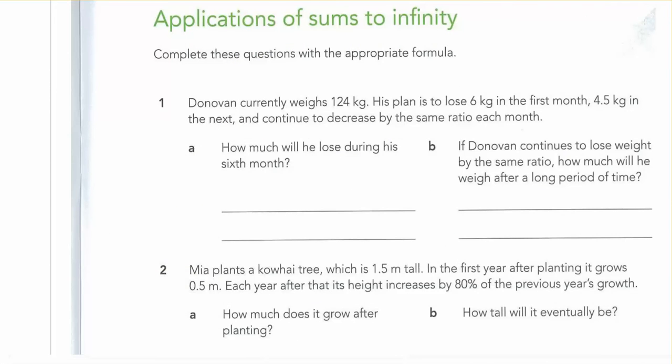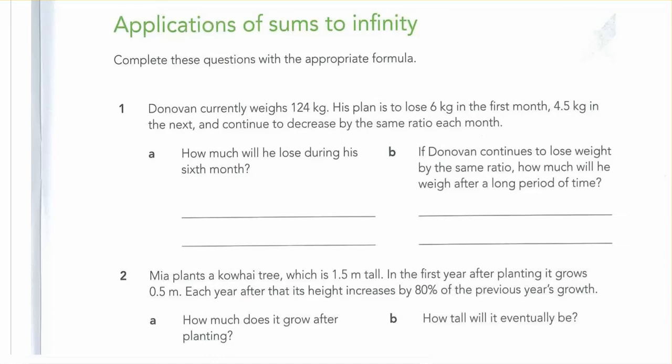And looking at the applications, how this looks is a word problem. Donovan currently weighs 124 kgs. His plan is to lose 6 kgs in the first month, 4.5 kgs in the next, and continue to decrease by the same ratio. So that means our r value, this is a geometric sequence, each month. How much will he lose during his sixth month? So here, in the sixth month, they're just looking for a particular amount. That's the sixth month, wanting to know how much it will be. And his n is equal to 6.